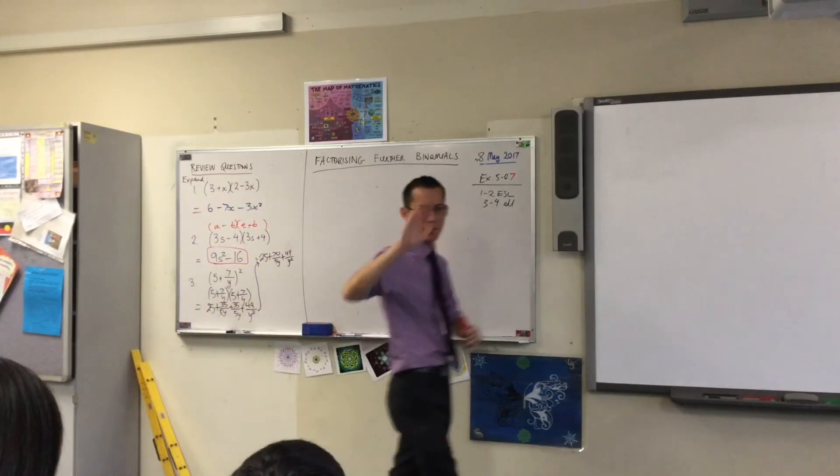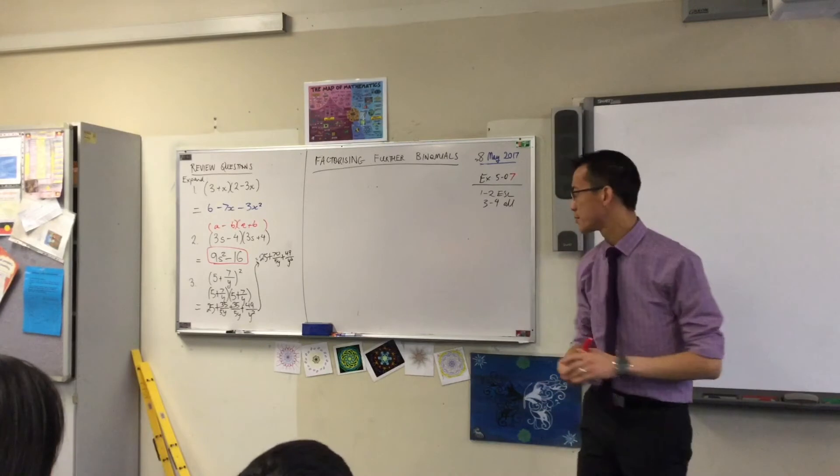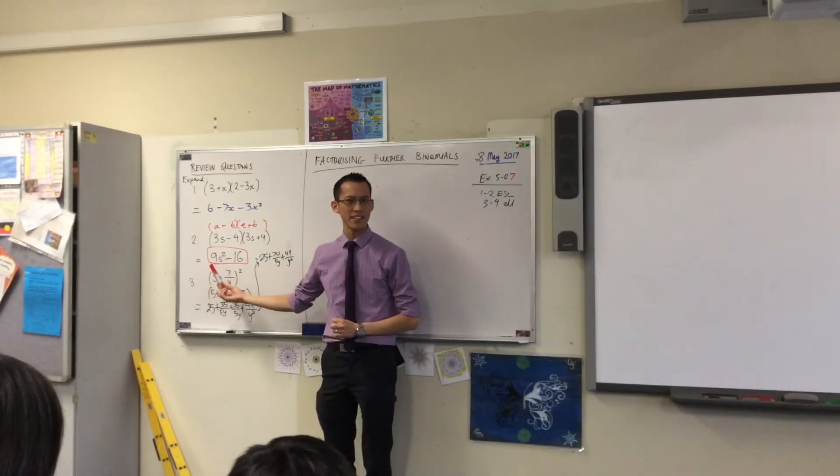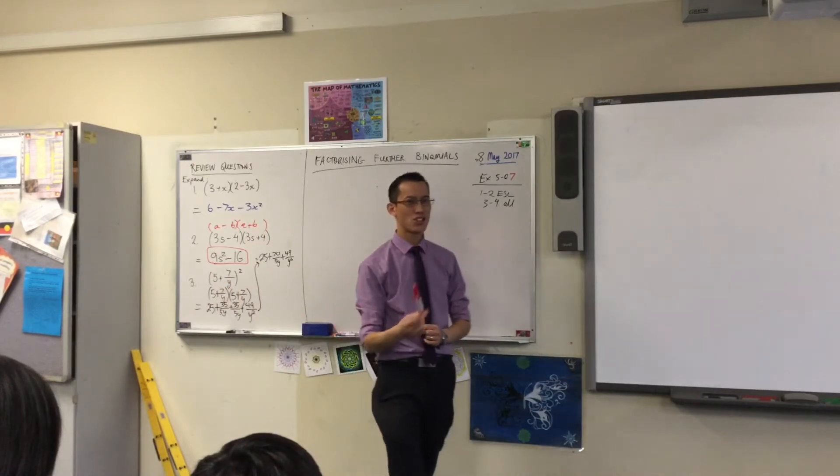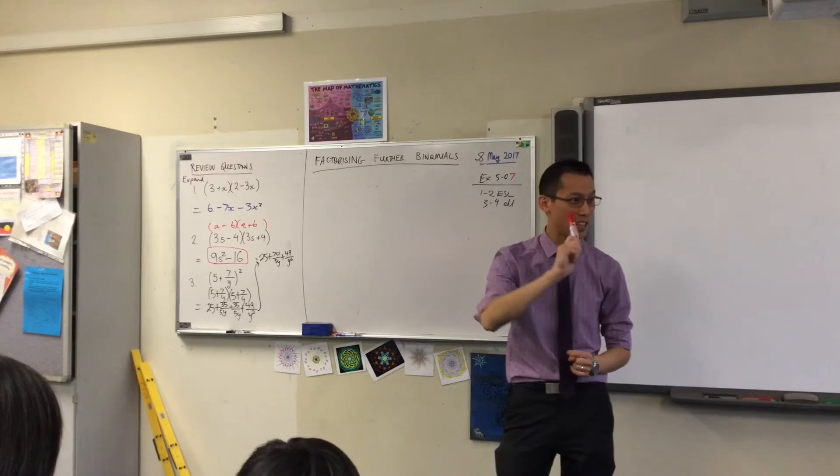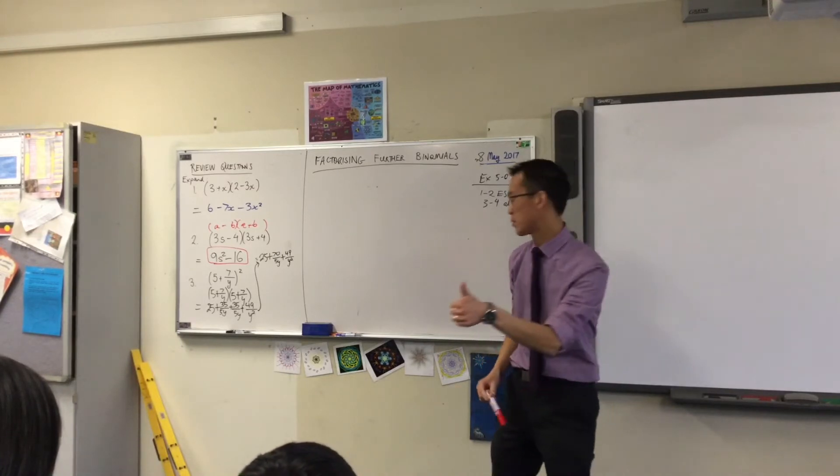And do you remember what that's called? That pair of things together, where one's a minus and one's a plus? It's a conjugate. Thank you very much. So, is 9s squared, take away 16, lining up with what you expected? Big thumbs up. Good job.